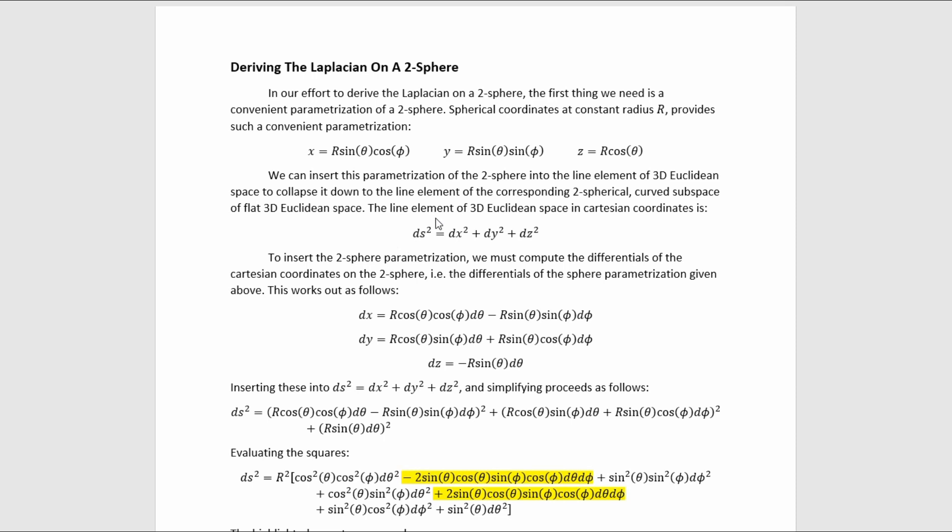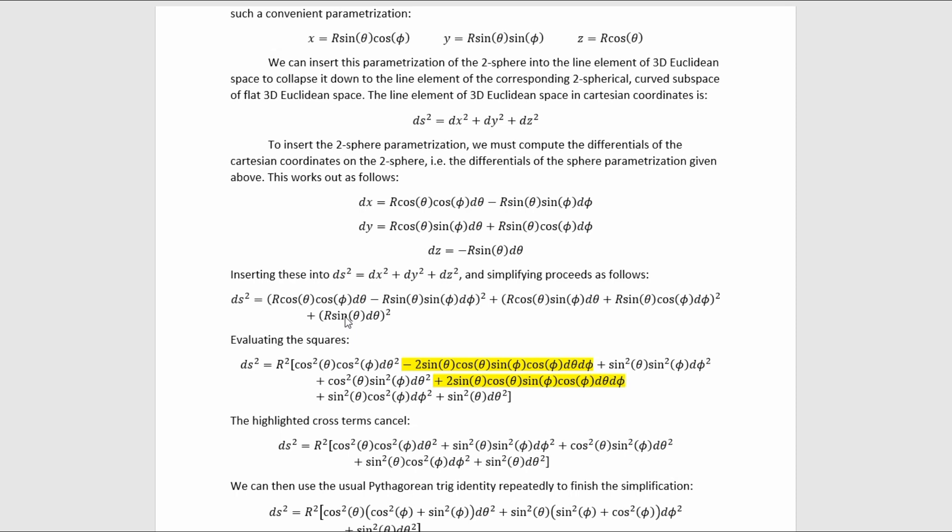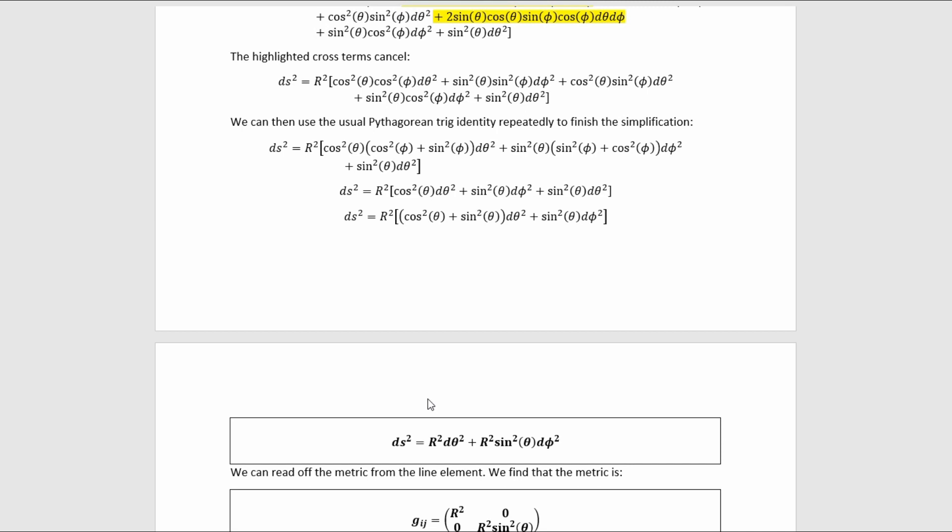The line element of 3-D Euclidean space in Cartesian coordinates is simply this. To insert the 2-sphere parameterization, we must compute the differentials of the Cartesian coordinates on the 2-sphere, i.e. the differentials of the spherical parameterization given above. This can be easily done using the chain rule and the product rule. It simply gives these results there. Plugging these into that gives us this result. We can then evaluate the squares and we get these two canceling cross terms. Getting rid of them gets us to this. Then we can use the Pythagorean identity and some factoring to finish the simplification, ultimately to get to this.